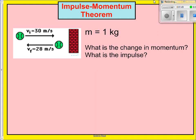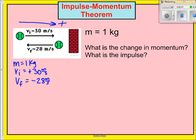The first thing we want to do is establish a positive direction. Most of the time, I will make the positive direction to the right. Now that we know that, let's write out the information we have. The mass is one kilogram. The initial velocity is 30 meters per second, and since it's facing to the right — which I've made positive — it's positive 30 meters per second. The final velocity is 28 meters per second, but notice the direction: the final velocity is facing to the left. Since right is positive, the final velocity is actually negative 28 meters per second. This is probably one of the most commonly missed things in the momentum unit, so please pay attention to direction.